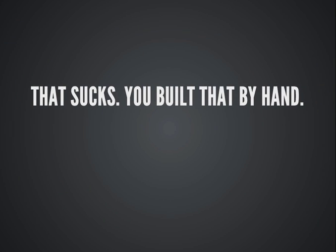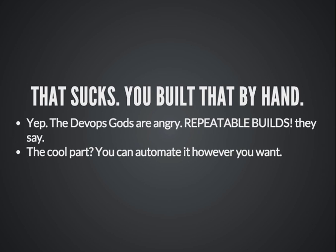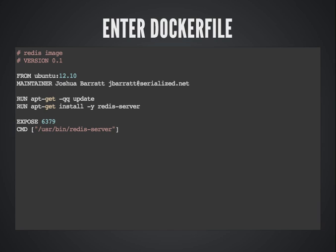The way I built that Redis container was not very repeatable. The DevOps gods are angry — we want repeatable, automated, deployable builds. If it's not executable by a computer, it doesn't count as documentation. Docker has this great built-in capability called a Dockerfile. The syntax is simple: starting keywords followed by arguments. We base this off Ubuntu 12.10; each RUN command runs a command inside the container and commits the result. So we run apt-get update, then apt-get install the Redis server.